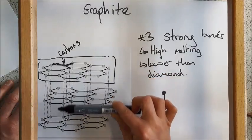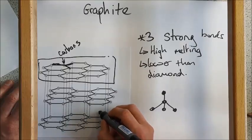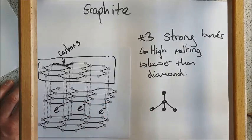Between each sheet—this shows three different layers of graphite—we've got these dotted lines. They represent where we have free electrons in between the layers.